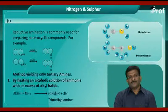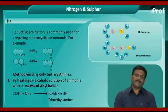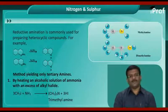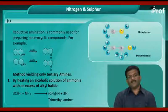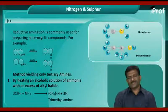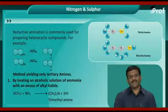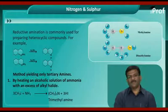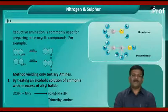The first method is by heating an alcoholic solution of ammonia with an excess of alkyl halides. The reaction is: CH₃I plus ammonia (NH₃) gives trimethylamine along with the formation of hydrogen iodide.